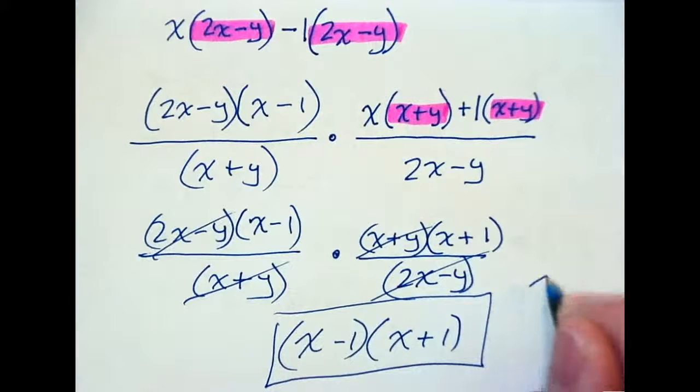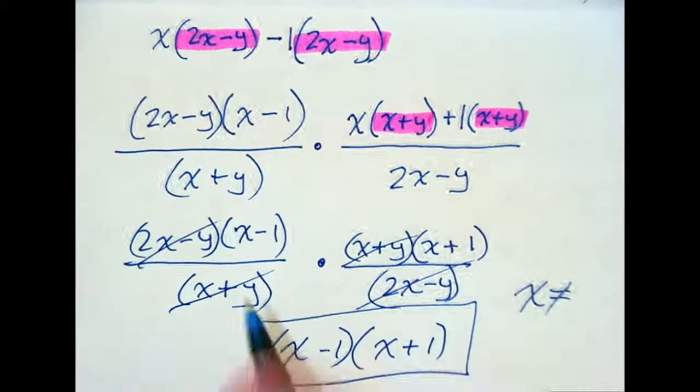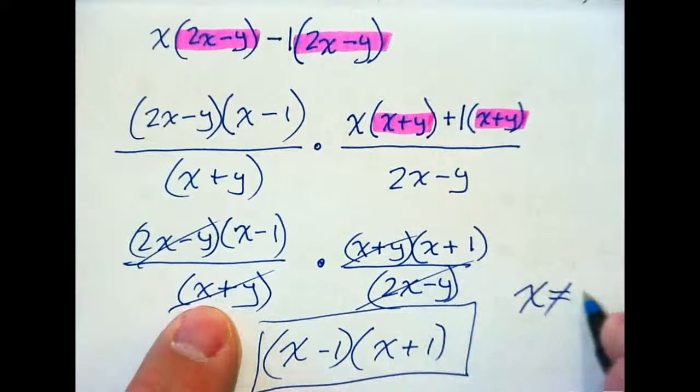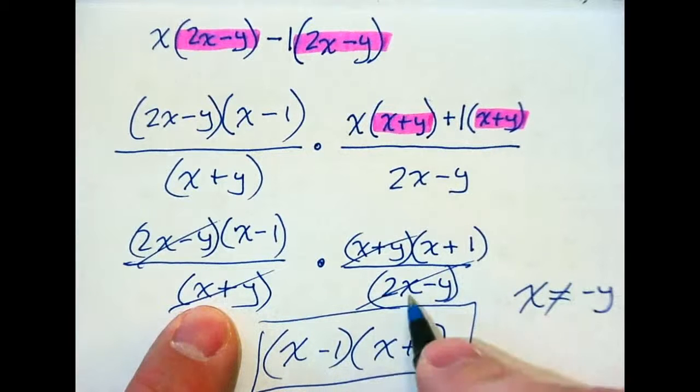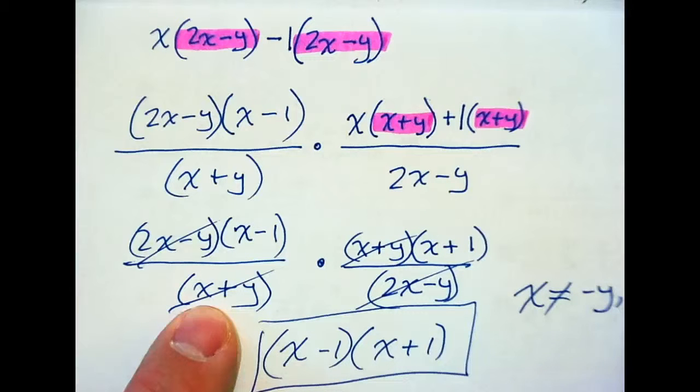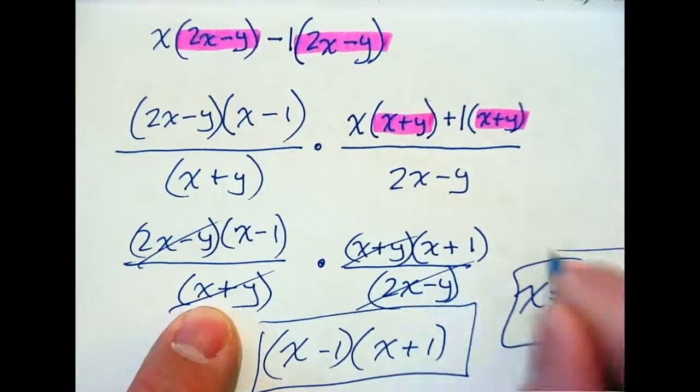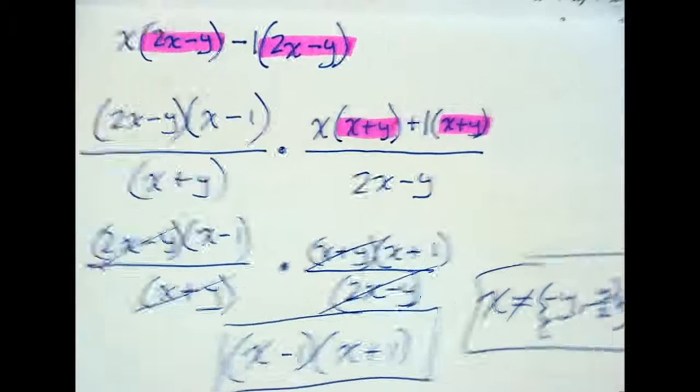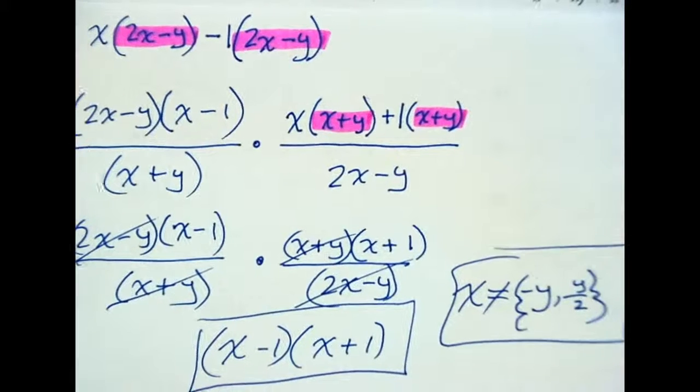And then your restrictions. X cannot equal Y, or negative Y. Or add Y, divide by 2, Y over 2. Any questions on that?